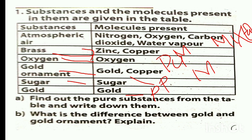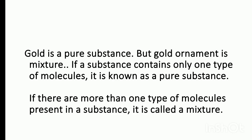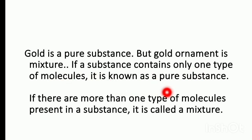What is the difference between gold and gold ornaments? Gold is a pure substance — it is one type of molecules. But gold ornaments is a mixture because it contains copper. If a substance contains only one type of molecules it is known as pure substance; if more than one type, it is called a mixture.